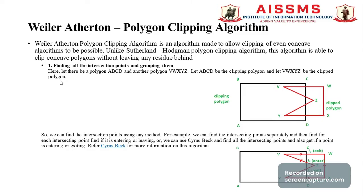Weiler and Atherton are the two scientists who combined to create this algorithm, which is why it is called the Weiler-Atherton polygon clipping algorithm. Firstly, we require finding out all the intersection points. It requires a clipping polygon — we have taken A B C D — and a clip polygon named V W X Y Z.